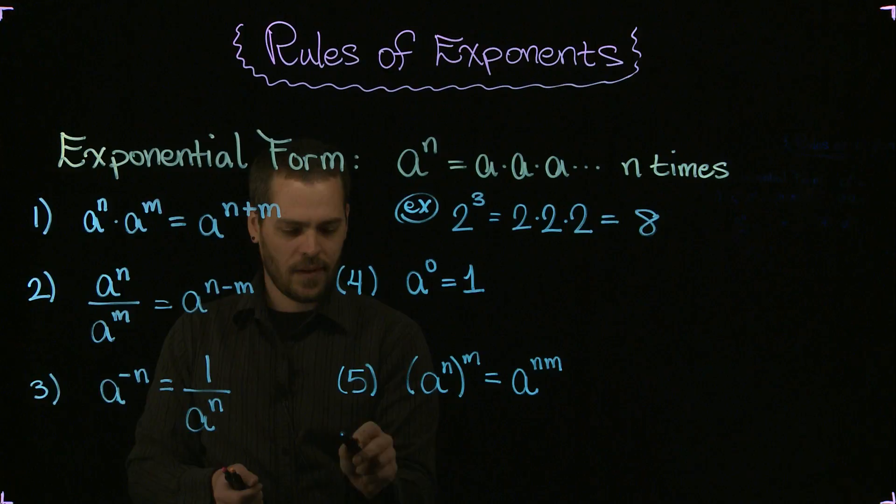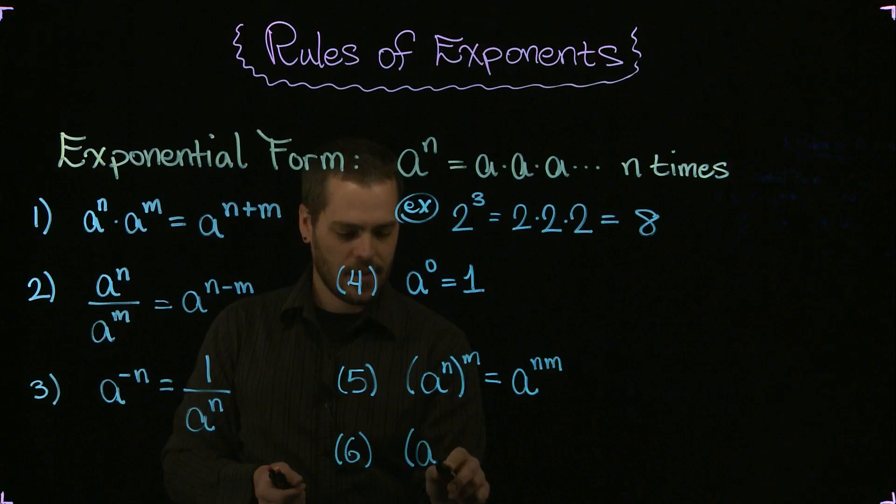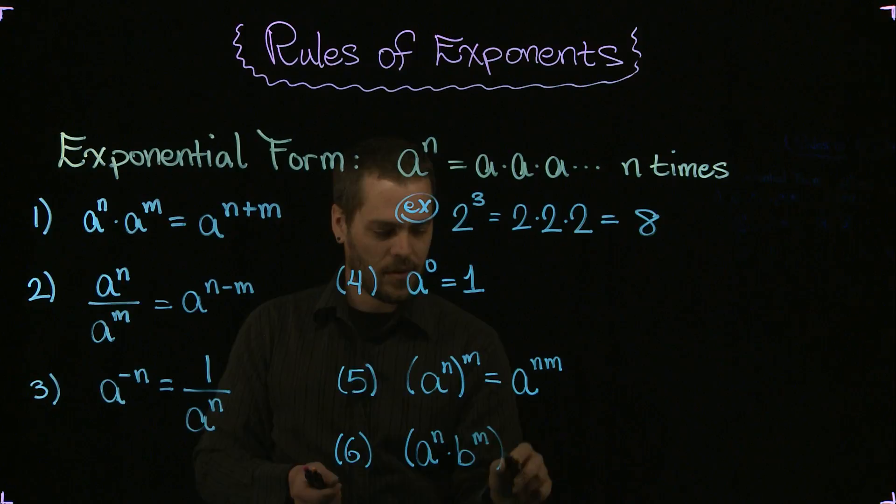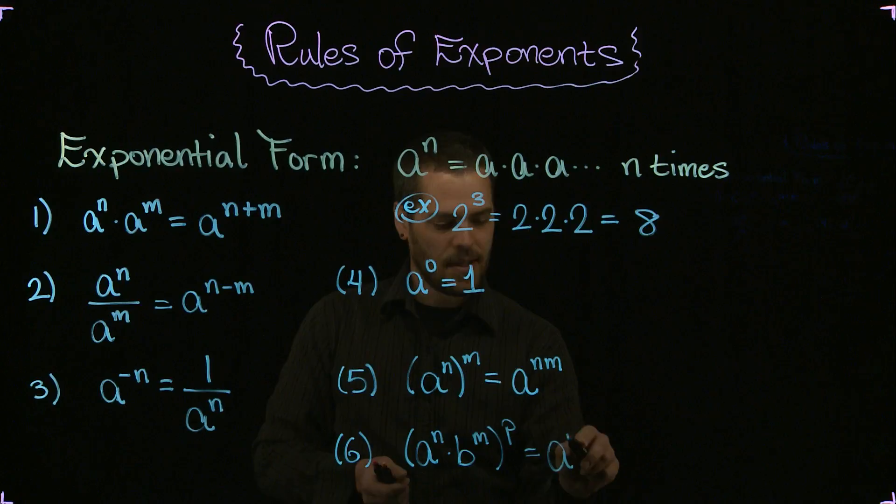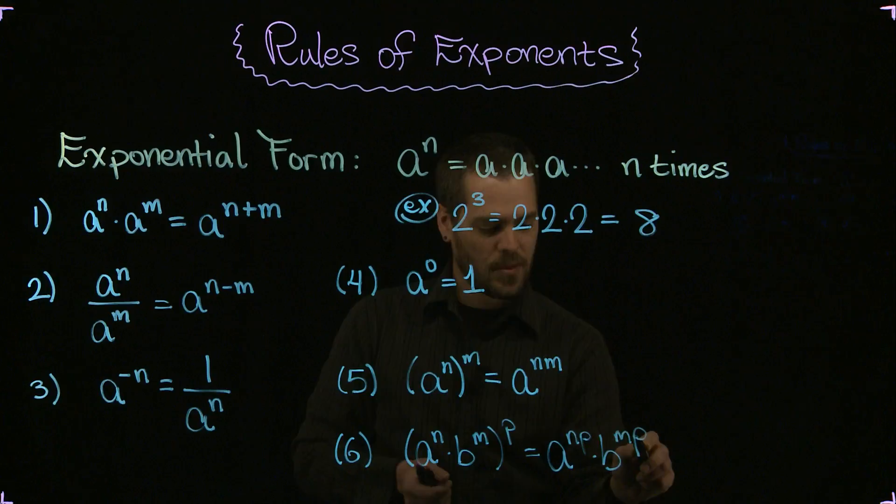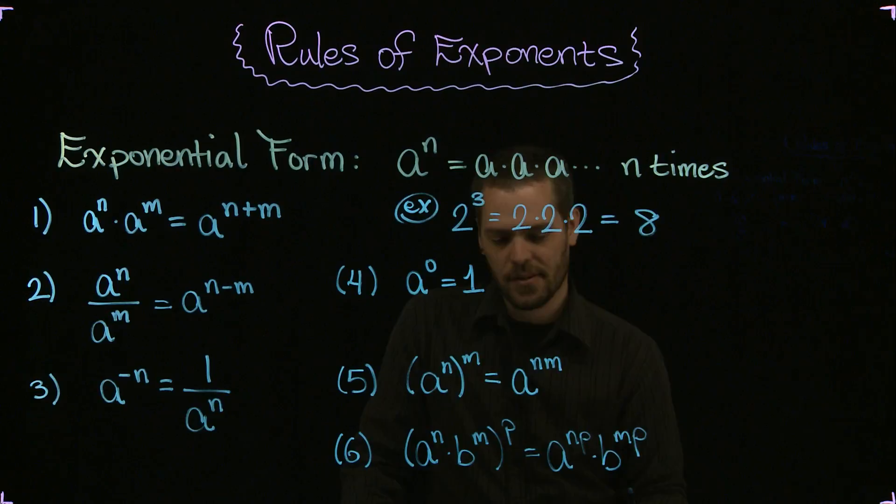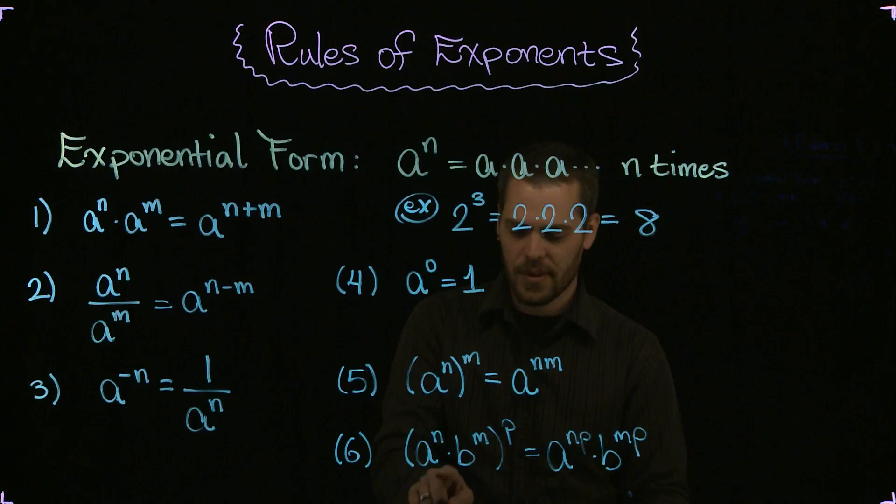Rule number six, we can sort of keep going with this one and say that it also must be true that parentheses a to the n times b to the m, all of that to the p power is the same as a to the np times b to the mp power. So I'm distributing this power to the powers of the exponential expressions inside.